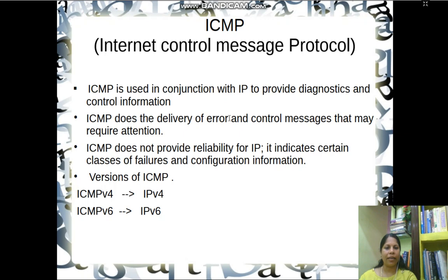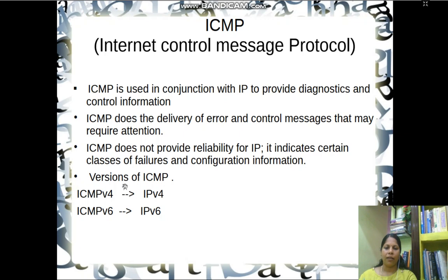By hearing the term error and control messages, we should not get confused with the error control mechanism we discussed earlier in other modules, because ICMP does not provide any reliability. It only indicates certain classes of failure and configuration information — not the error control mechanism discussed in other modules. There are two versions of ICMP. Internet Protocol has two versions: version 4 and version 6. ICMP version 4 works along with IPv4 and ICMP version 6 works along with IPv6.